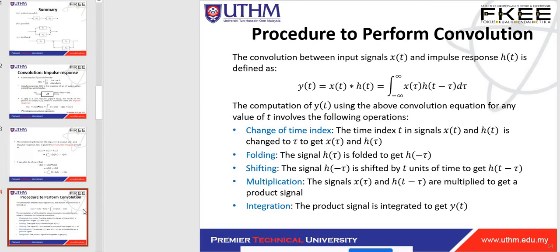The procedure to perform convolution between input signal x(t) and impulse response h(t) involves five steps. The computation of y(t) using the convolution equation for any value of t involves the following operations. Step 1: change of time index. Step 2: folding. Step 3: shifting. Step 4: multiplication. Step 5: integration. You must follow these five steps.